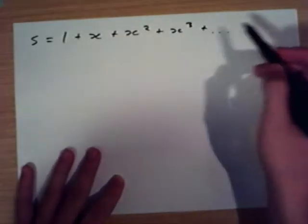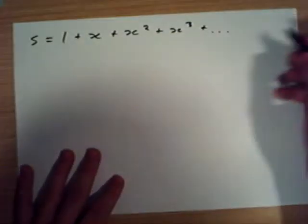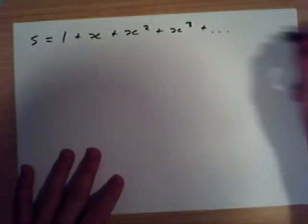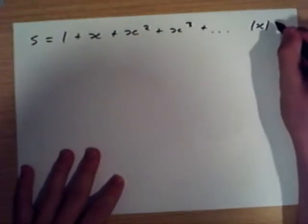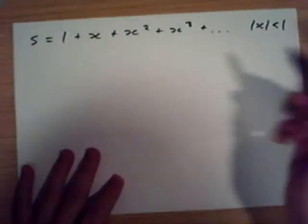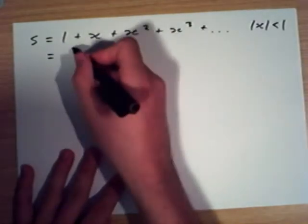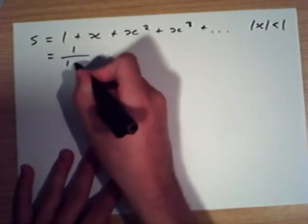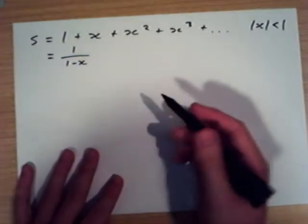It becomes plus x to the 4, plus x to the 5, plus x to the 6, etc. Now it turns out that if x, the size of x rather, is less than 1, which means it's between minus 1 and 1, this sequence is actually equal to 1 over 1 minus x. That is, it has a finite value.